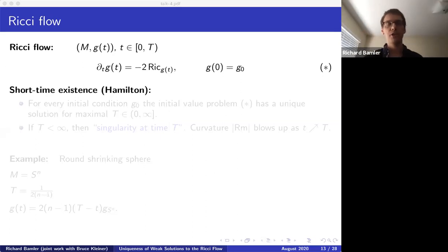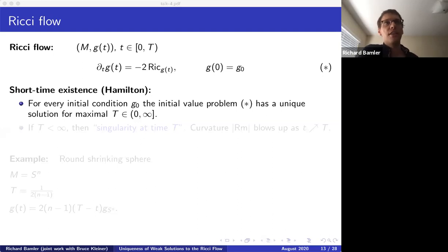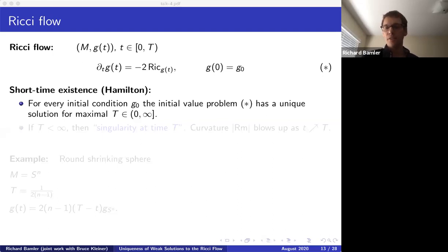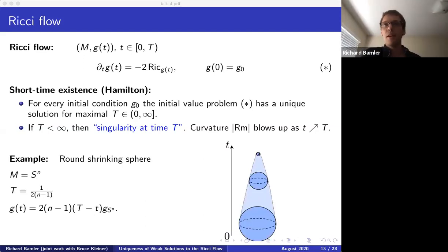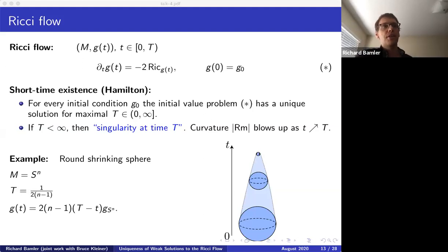One of the first results is the short-time existence theorem due to Hamilton, proven in the paper where Ricci flow was first introduced. It states that for any initial condition g₀, this initial value problem has a unique solution up to some maximal time T on a compact manifold. If T is infinity the flow exists for all time; if finite, the flow develops a singularity at time T, detectable by the curvature blowing up. The most basic example is the round shrinking sphere: the standard round sphere shrinks and develops a singularity at time 1/(2(n-1)), with the metric shrinking proportionally to the remaining time.